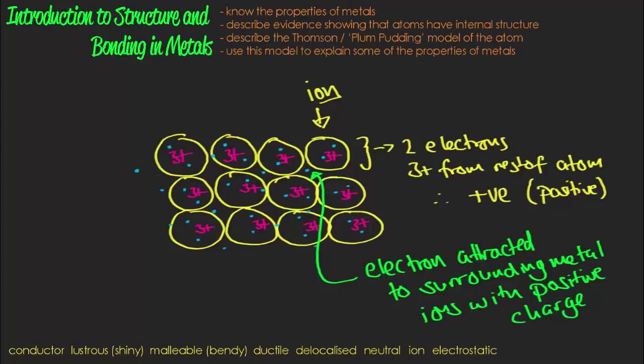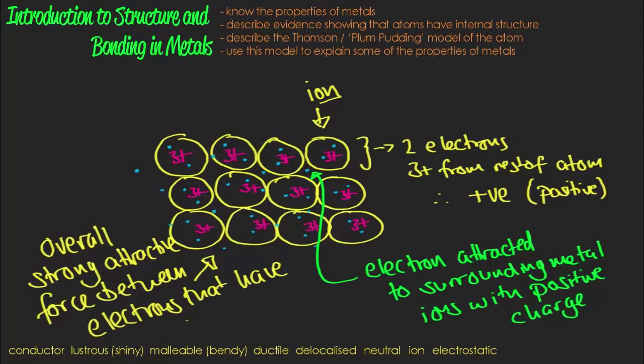This electrostatic attractive force between the delocalised electrons and the metal ions is the nature of the metallic bond. When we say electrostatic, we mean an interaction between two charged objects. So when you rub your hair with a balloon and it sticks to the wall, that's an example of an electrostatic force.